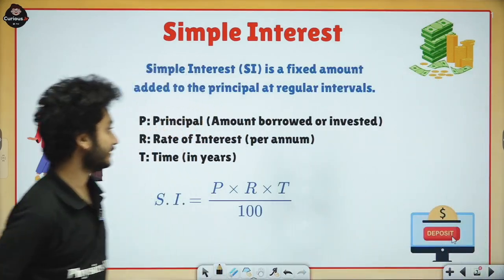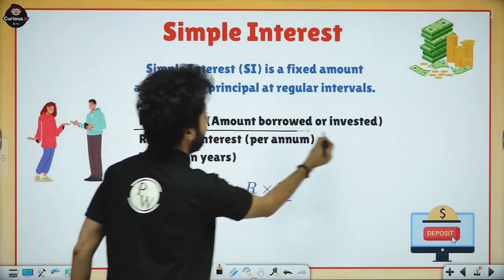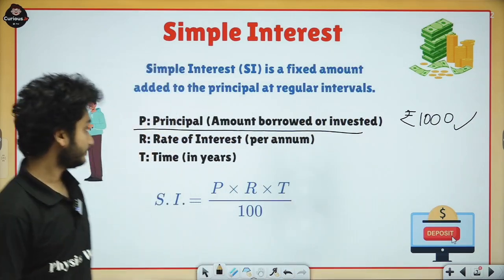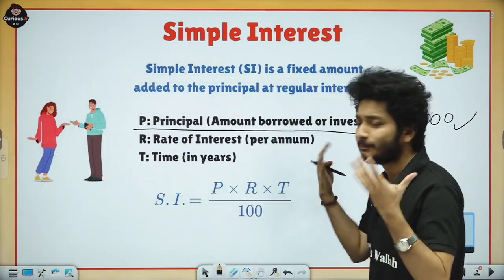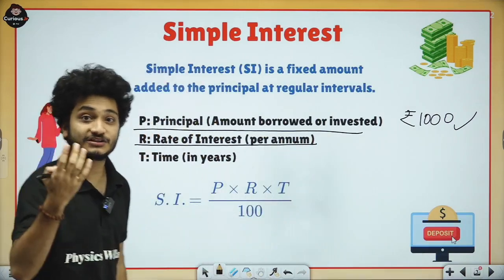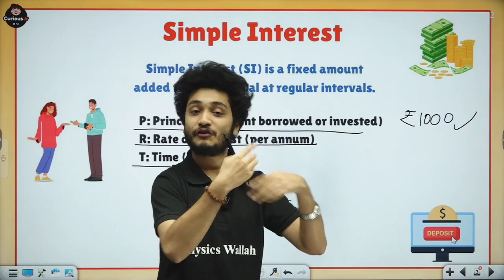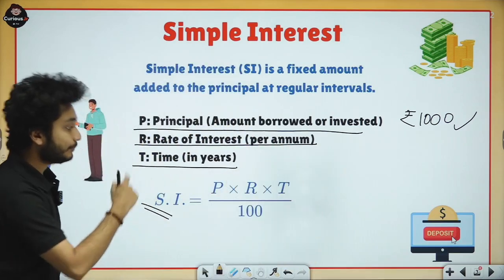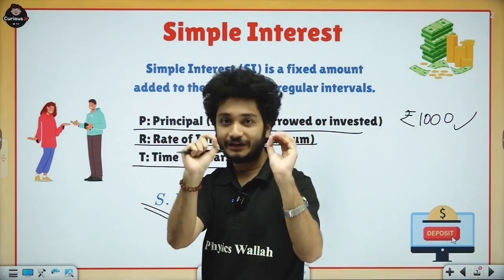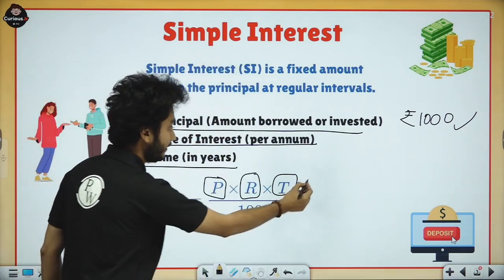Let's do a little calculation to see how it works in real life. The amount that is borrowed or given is called the Principal. In our example, that amount was 1000. Rate of interest is what percentage extra is wanted — how much percent of the principal. Time is how long it takes to return the money. The formula for simple interest is P × R × T ÷ 100, where P is principal, R is rate of interest decided by both parties, and T is the time period.